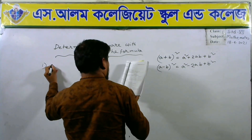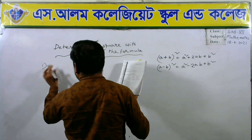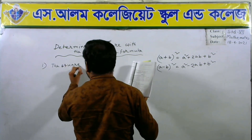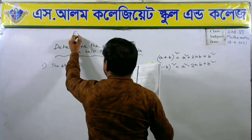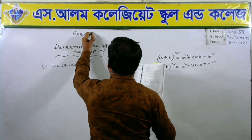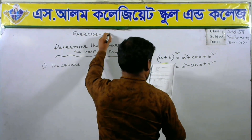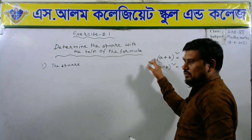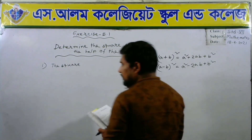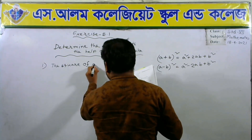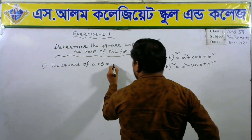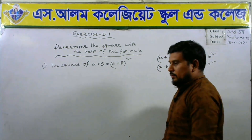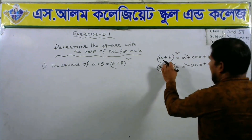Number 1. The chapter is exercise 5.1. We can solve the math with the help of this formula. The s square of a plus 5 equals to a plus 5 whole square. We can write a plus 5 whole square. This is similar to a plus b whole square.